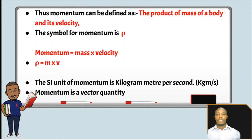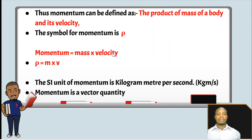What is momentum? Momentum is defined as the product of the mass of a body and its velocity. Momentum equals mass times velocity. The SI unit of momentum is kilogram meter per second — kilogram from the mass and meter per second from the velocity. Momentum is a vector quantity.